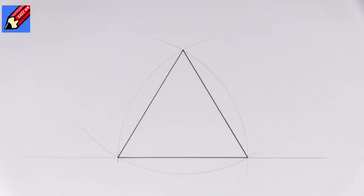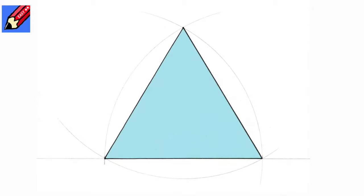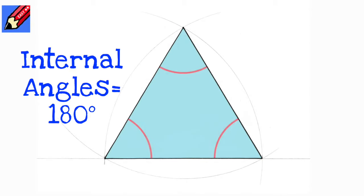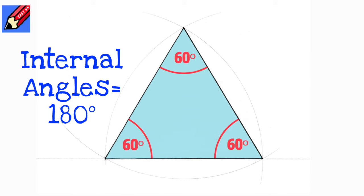And there we have a perfect equilateral triangle. Of course, all the angles inside a triangle add up to 180 degrees. 60 times 3 equals 180, so each angle is then 60 degrees. There you go, now you know how to construct a perfect equilateral triangle.